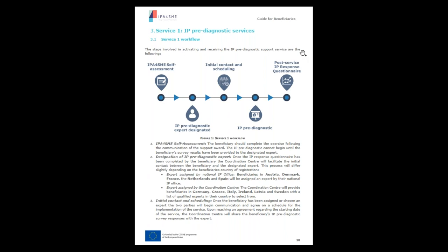Let's go with Service 1. If you have been awarded with Service 1, the workflow to complete it consists of five main steps. The first step is the completion of the HIPAA SME self-assessment, without which, as mentioned, the service cannot begin. Once you complete the survey, the Coordination Center will facilitate the initial contact between you and the expert. We are now on phase two, which is called the designation of IP Diagnostic experts.